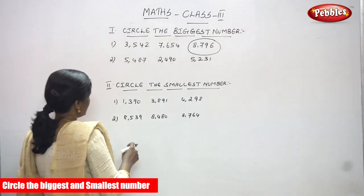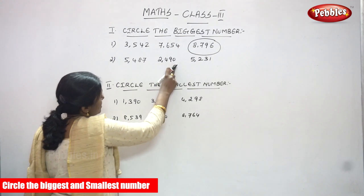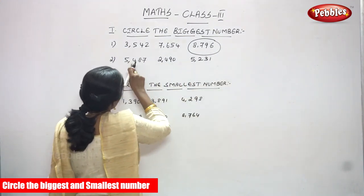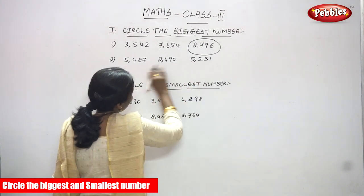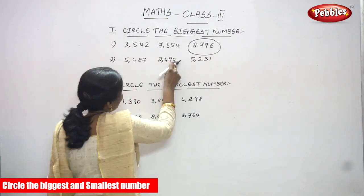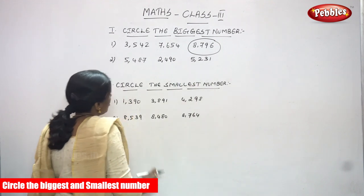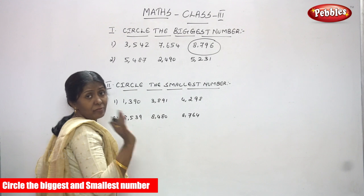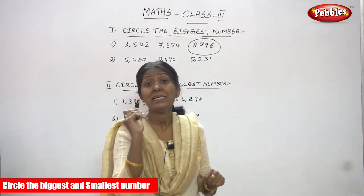The next question: the first number is 5487, the second number is 2490, and the third number is 5231. All are four-digit numbers with ones, tens, hundreds, and thousands places. As I told you, concentrate only on the thousands place value first.